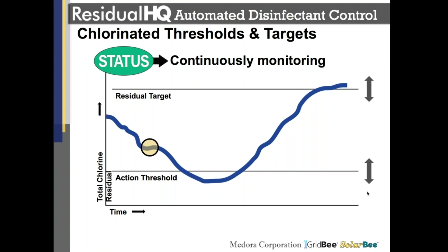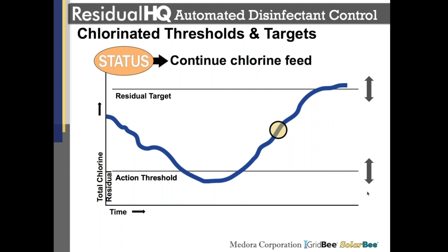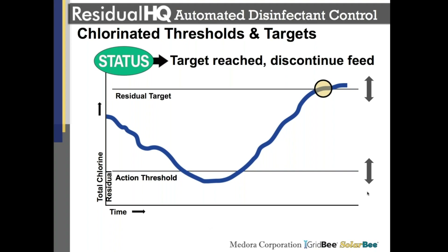When the system is above the action threshold, it's continuously logging data and circulating and cleaning components. Once it recognizes we've gone below the action threshold, a chlorine feed starts and continues as we progress towards the residual target. The feed rate, duration, and wait time between feeds are all configurable and can be tailored to the specific location. Once we reach the target, feeds are discontinued. However, as we approach the target, the system does its best to minimize potential overshoot through additional tunable parameters used in conjunction with feed rates and durations, helping us reach the target as quickly as possible without unreasonable overshoot.